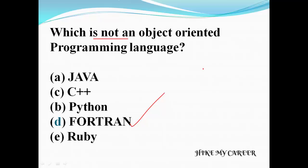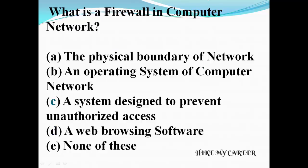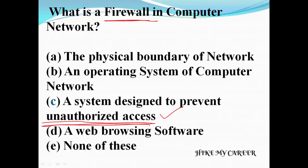Next question: what is a firewall in a computer network? A: A physical boundary of a network, B: An operating system of a computer network, C: A system designed to prevent unauthorized access, D: A web browsing software. Answer is C — a firewall is a system designed to prevent unauthorized access.